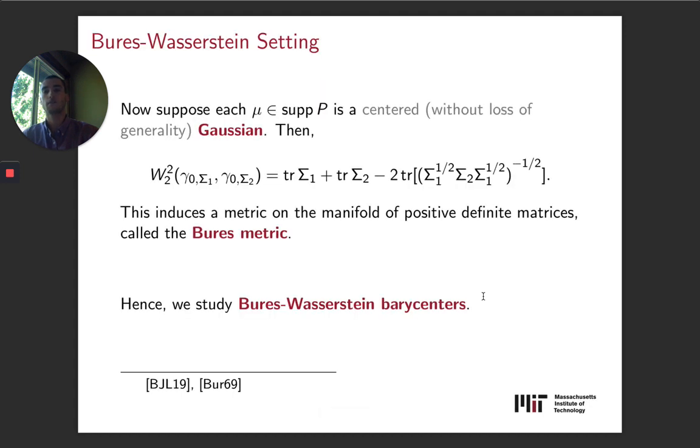What we do next is we specialize these two general results to the case where P is supported on Gaussians. In particular, we're going to assume without loss of generality that these Gaussians have mean zero. In this case, the squared-Wasserstein distance has this structure, this form here. This case is known as the Bures metric from a physicist or the Bures-Wasserstein metric or Bures-Wasserstein space. So now we're studying specifically Bures-Wasserstein barycenters. I should say that the Bures metric has a lot of really nice structure as a subset of Wasserstein space, which is what we're going to exploit.